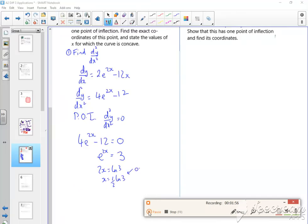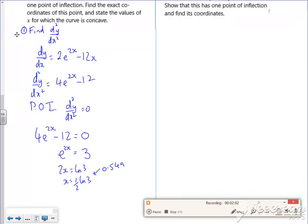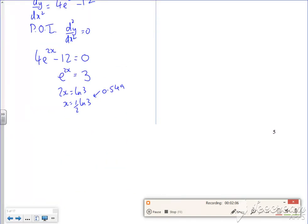so that's roughly 0.549. Roughly. So I'm going to check on either side of it. So I've got this now, so I just want to check on either side. I'll check d²y by dx² on either side.